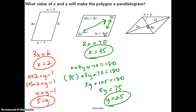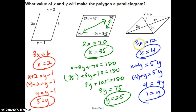For this last one, we use the fact that diagonals are bisected. Pause and try this on your own. Hopefully your first equation was 3X equals 12, giving X equals 4. Then using X plus Y equals 5Y, substituting 4 for X gives Y equals 1. If you didn't get that, pause and check your work to find your mistake.